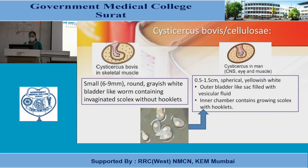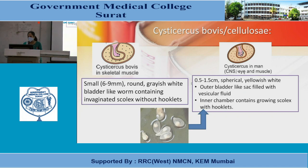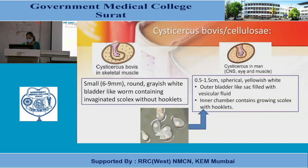Cysticercus bovis in skeletal muscle: size is 6–9 mm, round, grayish-white, containing an invaginated scolex without hooklets. In CNS, eye, and muscle (cysticercus cellulosae): size is 0.5–1.5 cm, spherical, yellowish-white, with an outer bladder-like sac filled with vesicular fluid. The inner chamber contains an invaginated scolex with hooklets.